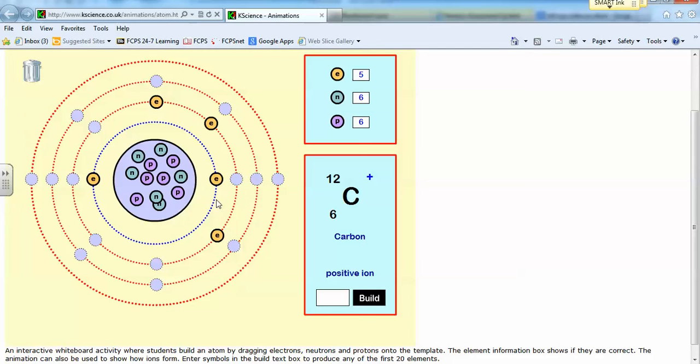So I've got more protons than I have electrons. Now we can also have a negative ion if I have more electrons. So notice now I've got seven electrons but only six protons. And that means that I have got a negative ion.